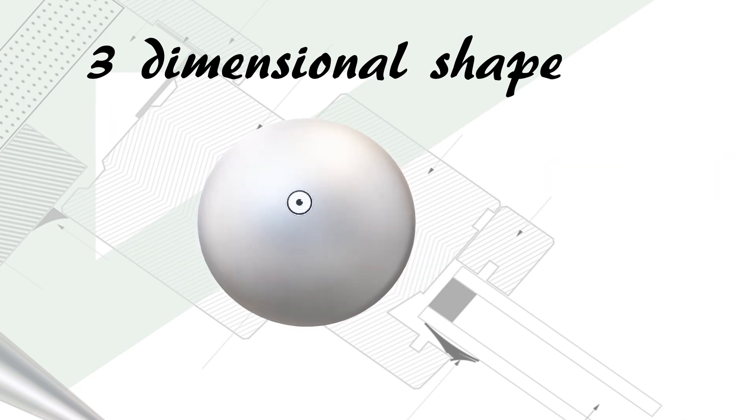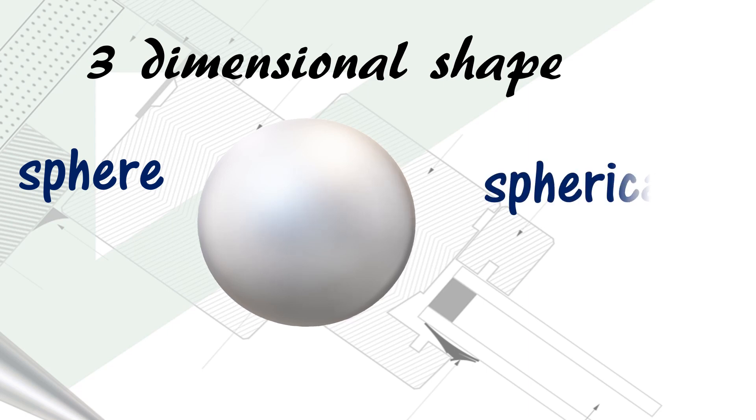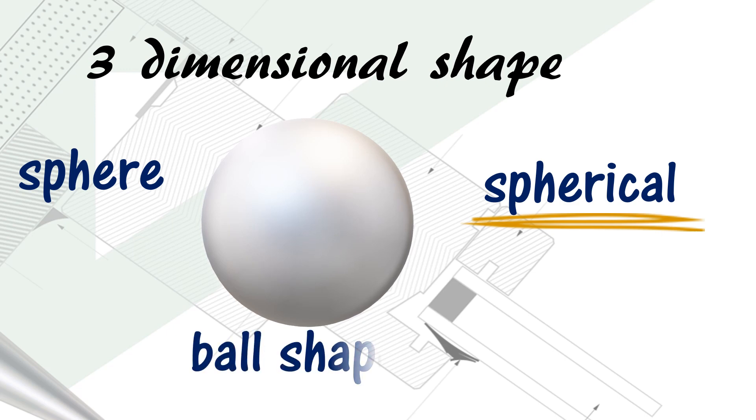Here is a circular shape in two dimensions. In three dimensions, we call this a sphere. If something has this shape, we call it spherical. Although in easy English, most people would call it ball-shaped.